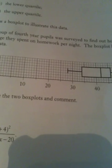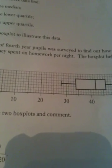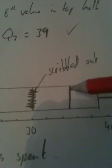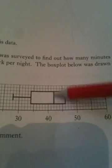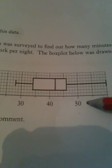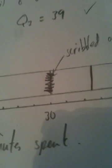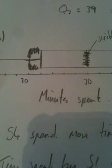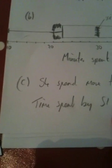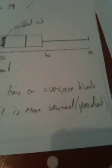A group of fourth-year pupils was surveyed to find out how many minutes on average they spent on homework per night. The box plot below was drawn for this data. Compare the two box plots and comment. So when you're comparing box plots, you look at the median. Here the median is 42. And the one I've just drawn, it's 35. So here the median is higher. So we'd say the average of this group is higher. In other words, the S4 spend more time on average on their homework. And we also look at the spread. Here we're looking from 10 up to 50. Here we're looking at 28 up to 60. So the spread's greater here. So the time spent by S1 is more varied or spread out.